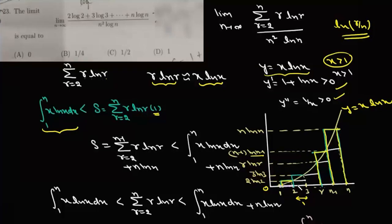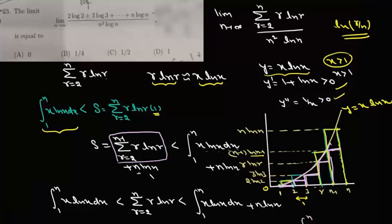Now there is another way to draw these rectangles — starting from the left endpoint. The rectangle from 2 to 3 has height 2·log2, then 3·log3, then r·logr, and n−1 log(n−1). This sum expressed as summation r from 2 to n−1 of r·logr will be less than the area under the curve, so it is less than the integral from 1 to n of x·logx dx. What's missing is the last term n·logn.